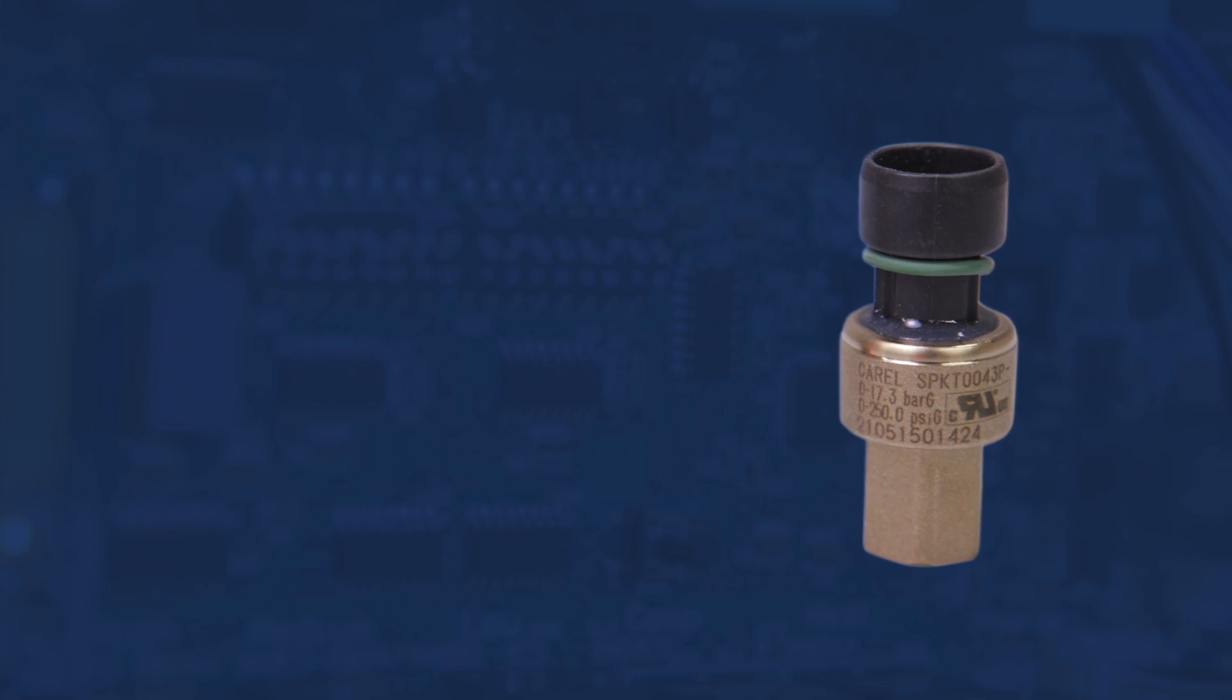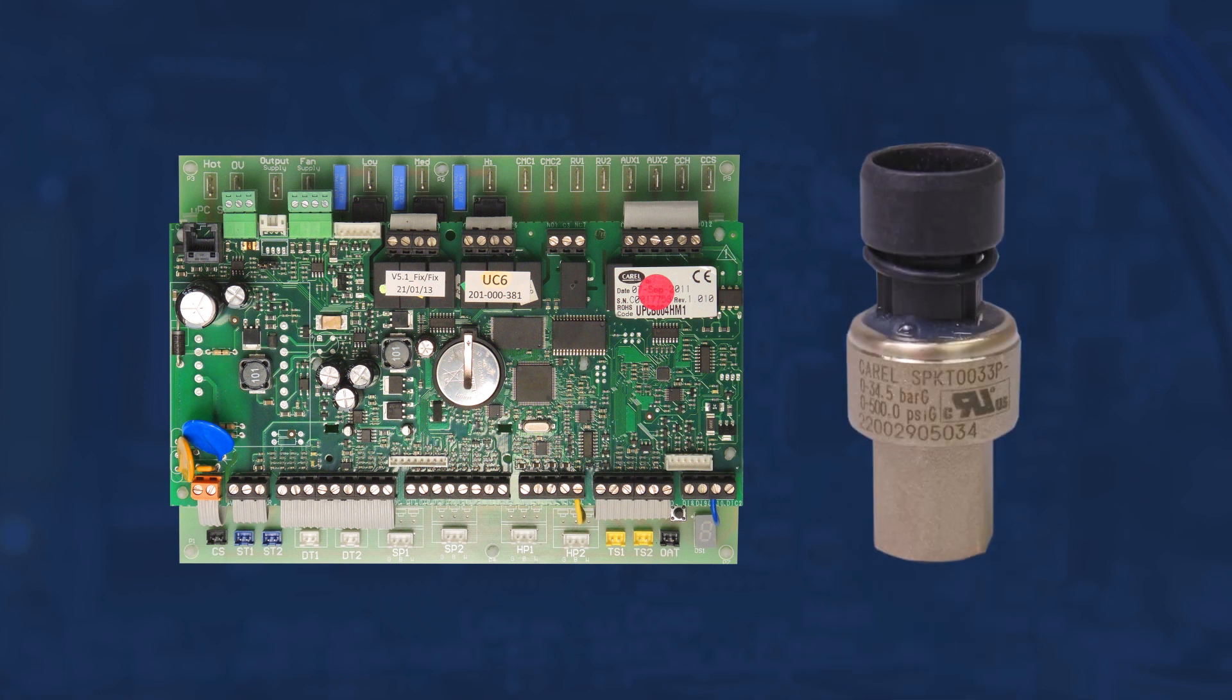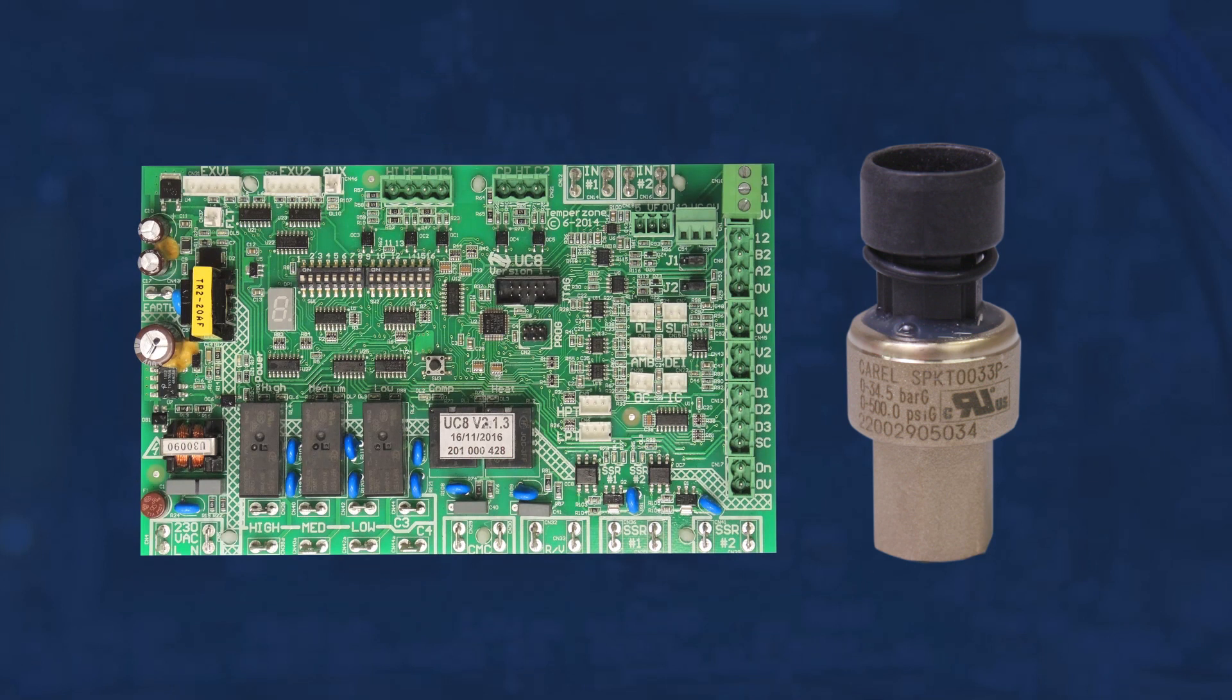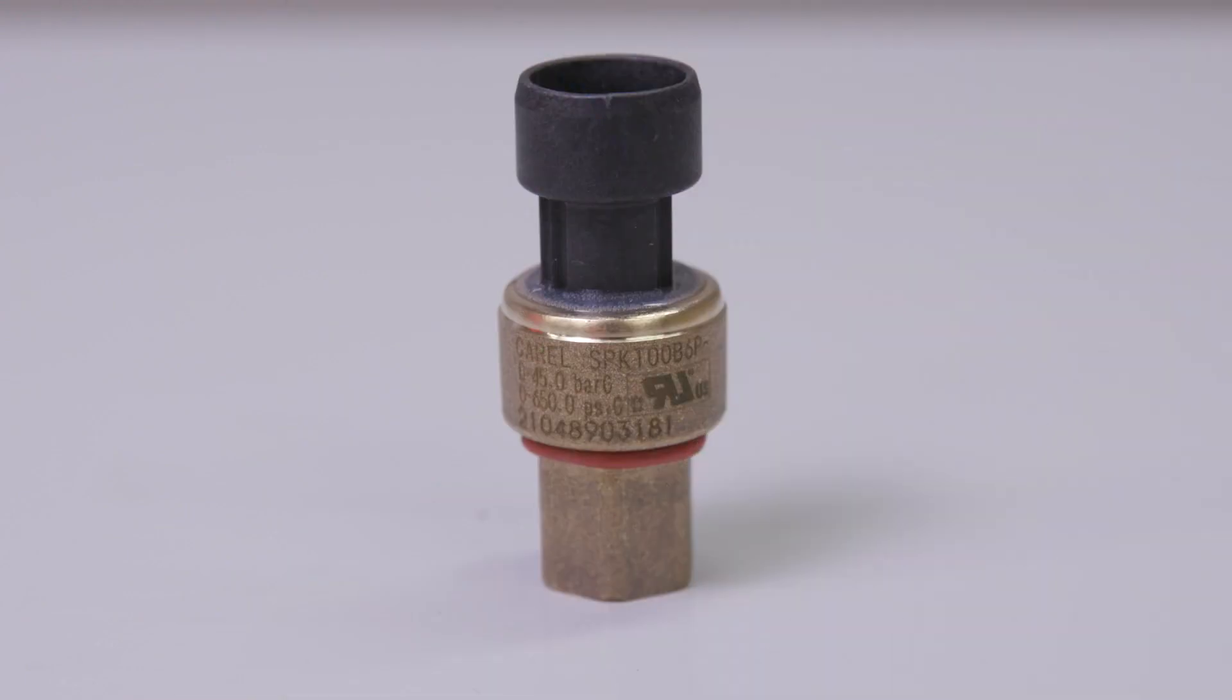suction transducer is used with UC6 printed circuit boards. A 0 to 34.5 bar suction transducer is used with UC7 and UC8 printed circuit boards. All printed circuit boards use a 0 to 45 bar discharge transducer.